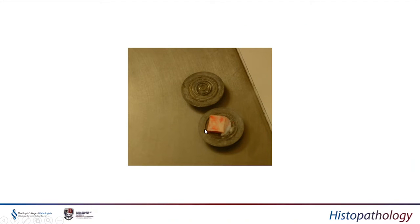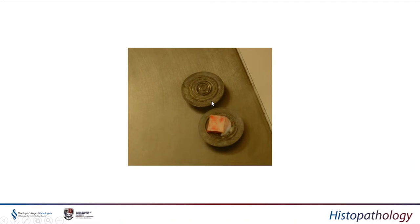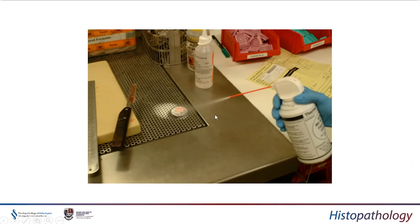Here we have a frozen section block taken from this lesion — about the size of a thumbnail, roughly a centimetre or so in size and a couple of millimetres thick. It must not overhang the cryostat chuck; it should be within the central area. If it's too big or has variable tissue such as fatty and firm, or necrotic and firm, it will freeze at differential rates and be difficult to cut. Once the block is taken and put on a mountant such as OCT, which binds the section to the chuck, it can be frozen — in this case using a spray freeze.